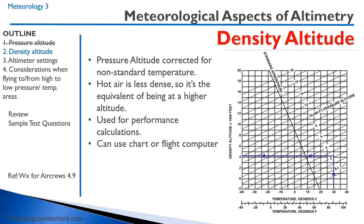Density altitude is the pressure altitude corrected for non-standard temperature. Hot air is less dense, so it's the equivalent of being at a higher altitude. This is a very important concept for performance calculations when we want to figure out how the aircraft will perform at a given altitude and temperature. Some pilot operating handbooks give performance calculations with both pressure altitude and temperature, and some will have you figure out your density altitude yourself.